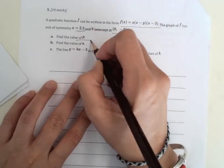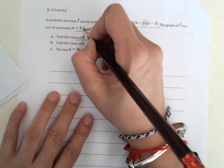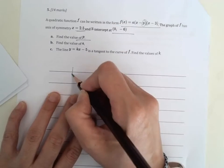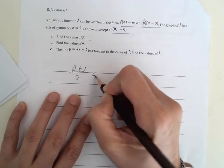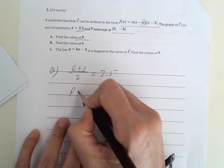So first of all they need to find P which is this point. And since the axis of symmetry is 2.5, which means that P plus 3 divided by 2 equals to 2.5. So nice and easy we flip everything over.